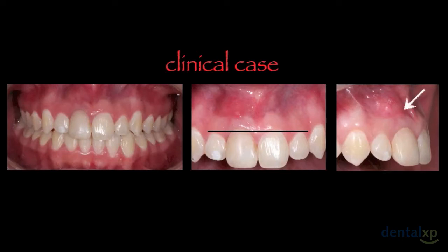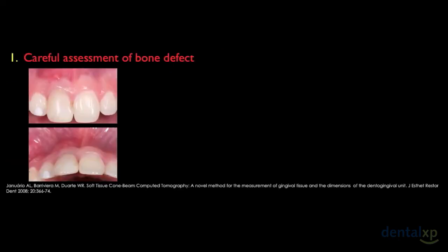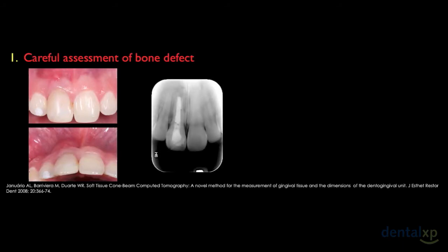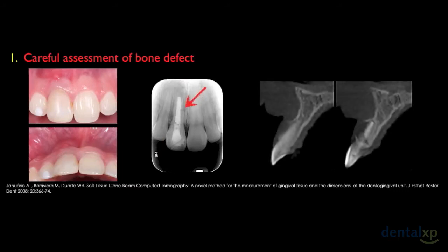We can see here a swelling of the soft tissues. Let's follow the technique step by step. Firstly, careful assessment of the bone defect previous to extraction — clinically, radiographically, and through CT scans. Clinically, we can notice the presence of an abscess and unevenness of the gingival margin. By x-ray, we can show the tooth to be extracted and notice the presence of a fracture. And through CT scan of soft tissue, we can see the abscess of the buccal bone wall.